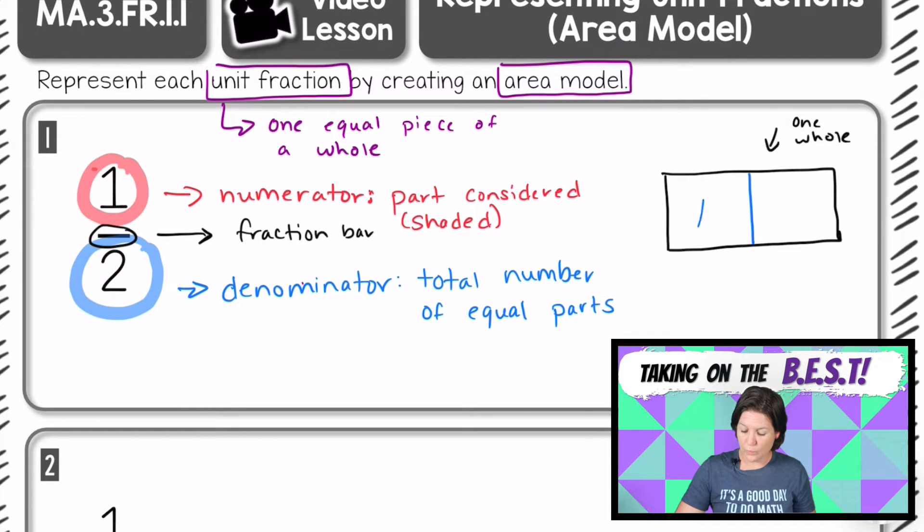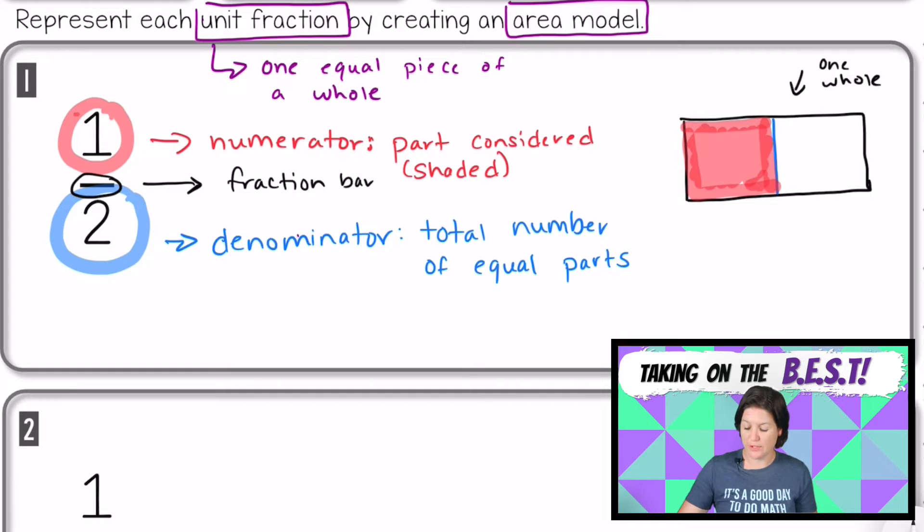So I'm going to go right over here and make a line going down right there. And now I have one, two equal parts. So we have the denominator represented here. But we don't have anything shaded in to show the amount. The numerator tells us that we need to shade in one equal part. So I'm going to take this one, and usually I start from the left, and we're just going to shade in one of those parts. And when we do that, we have now represented the fraction one half. You can see we've shaded in half of that rectangle. We've shaded in one out of the two equal parts.